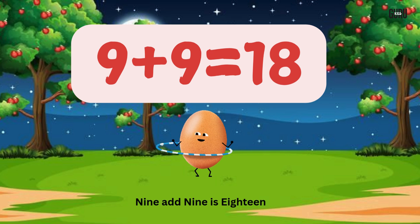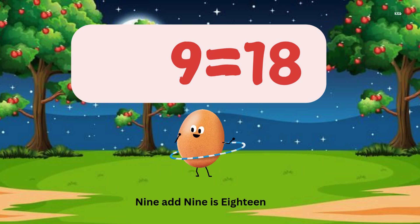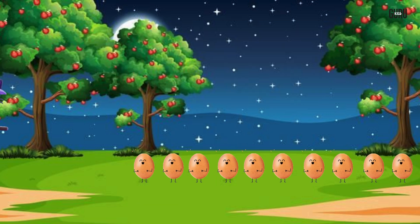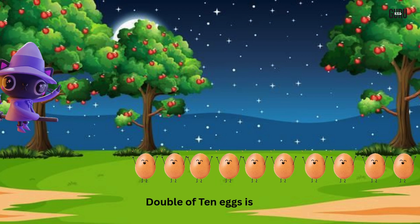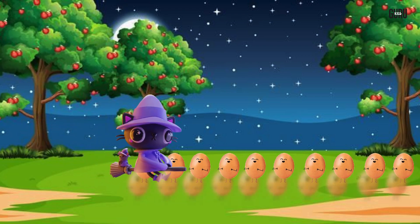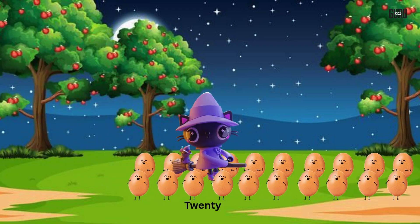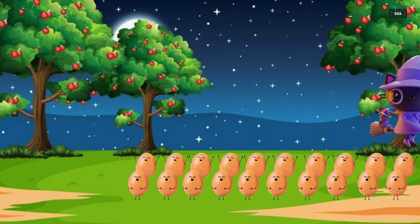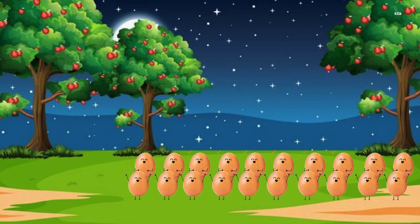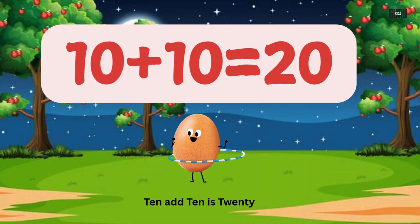9 add 9 is 18. Double of 10 eggs is 20. 10 add 10 is 20.